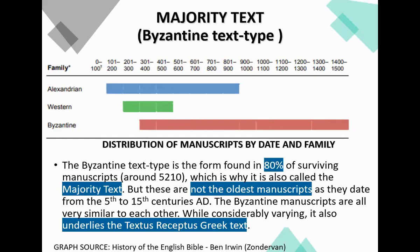The Textus Receptus, which was used for the King James, is similar to the Byzantine and majority text, but not the same. Most of the newer Bibles use the Alexandrian. There are some notable Byzantine manuscripts going all the way back to the 5th century, such as the Codex Alexandrinus. The Alexandrian text has the smallest amount — around 45 manuscripts — but it's the oldest. We have them up until about the 9th century, and then they tend to disappear.